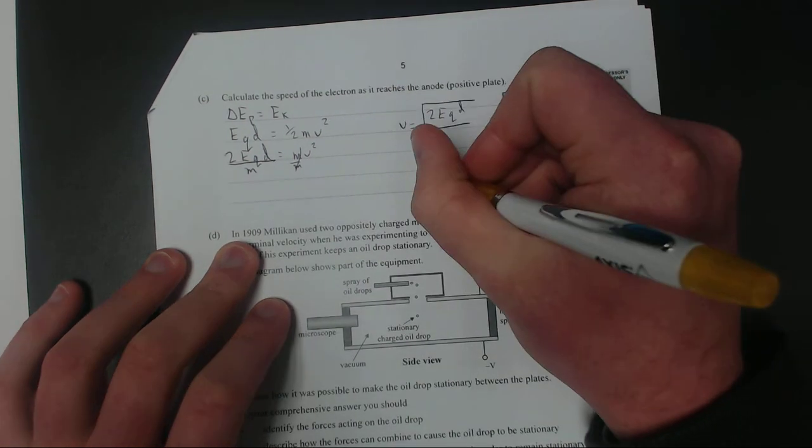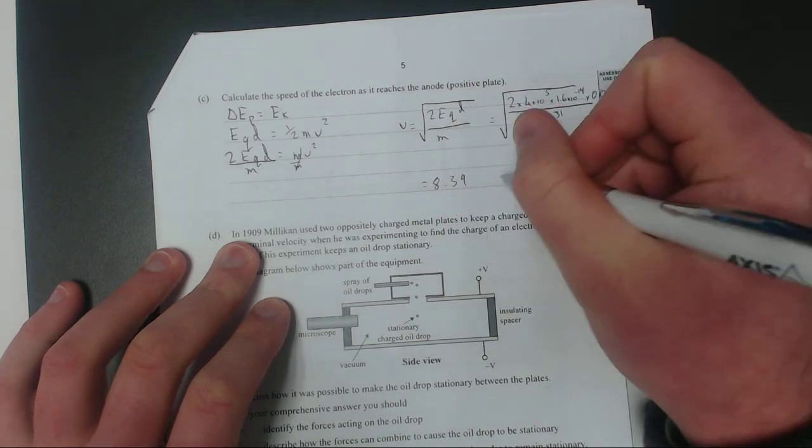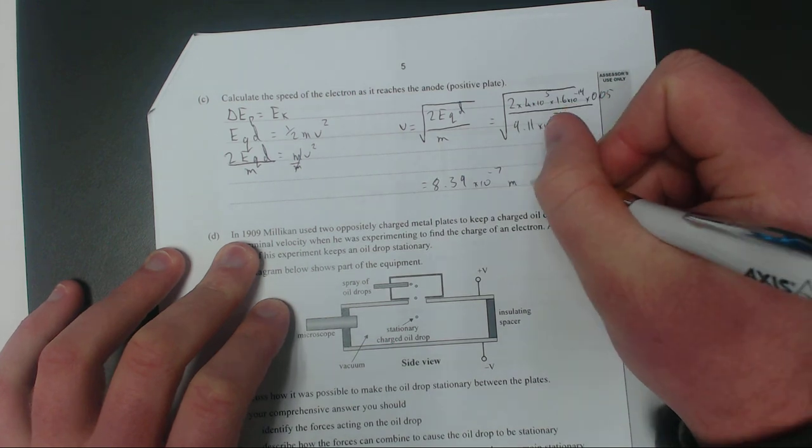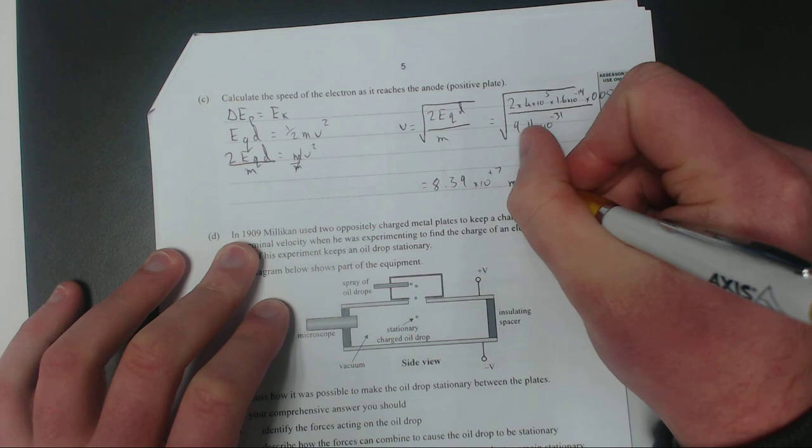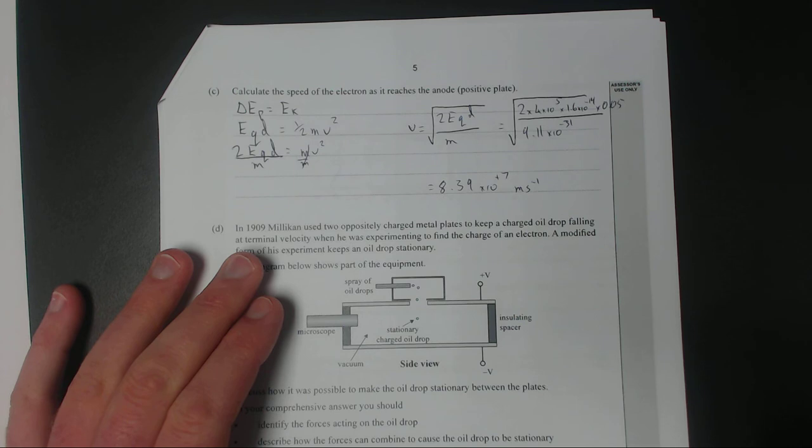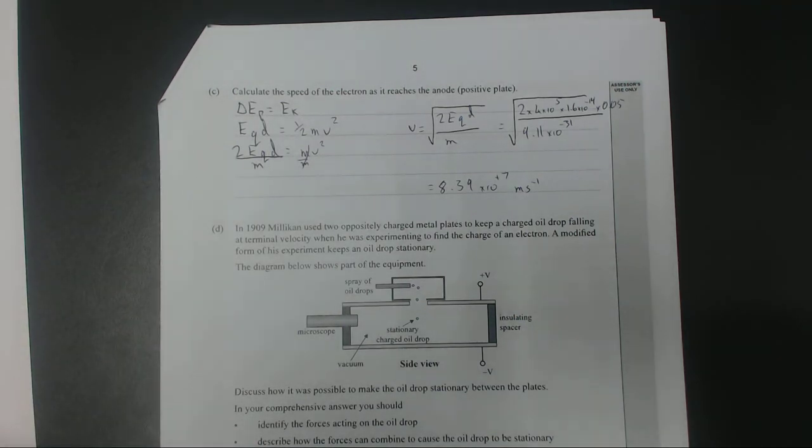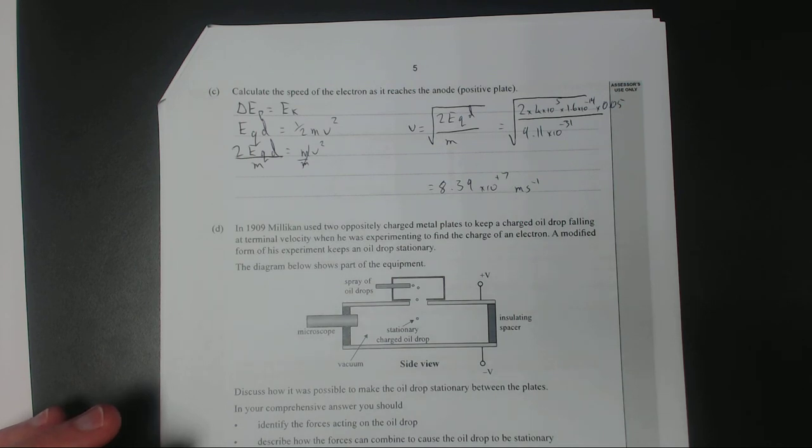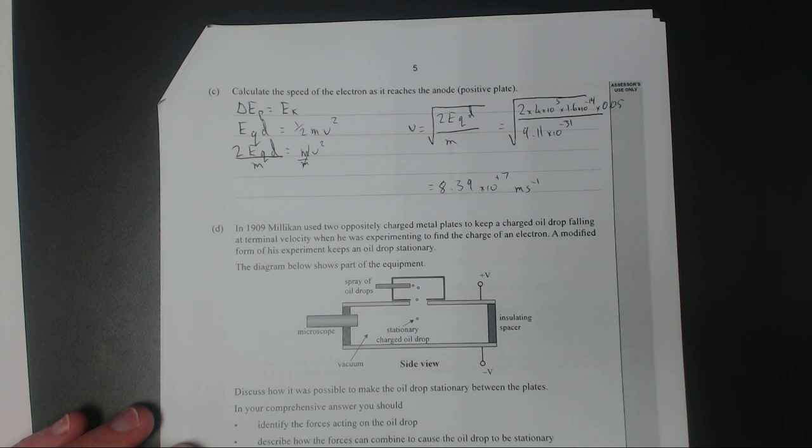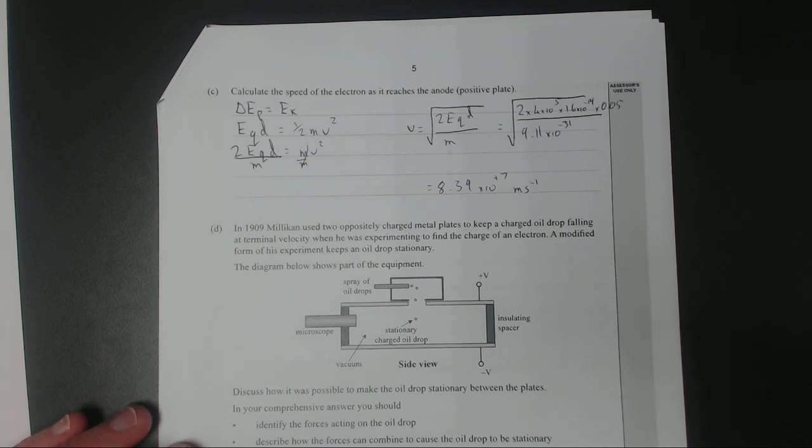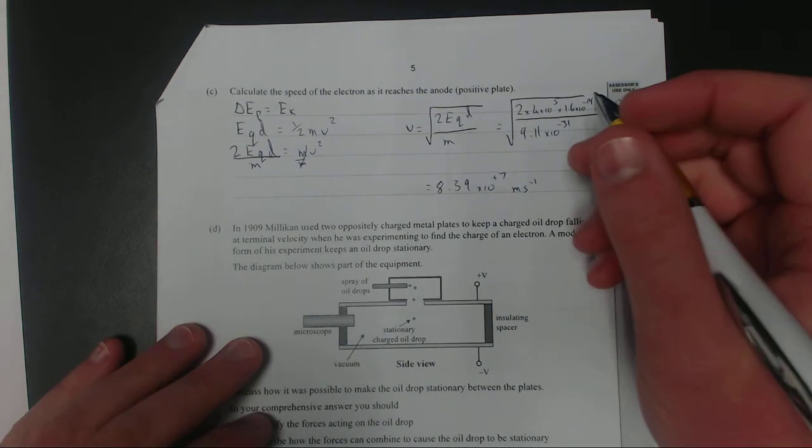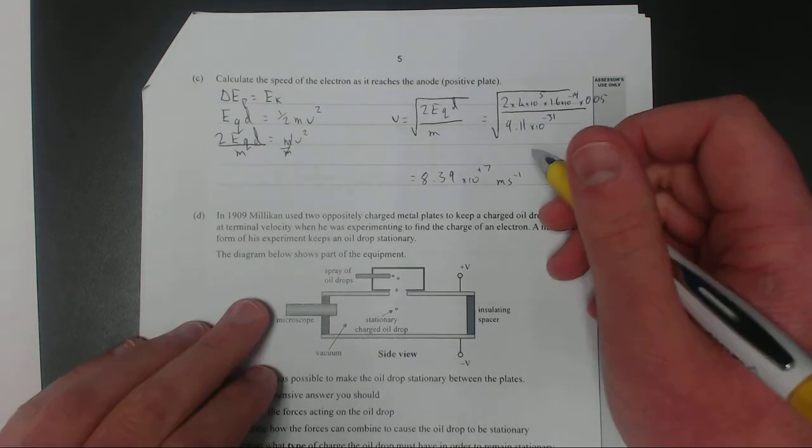So if you plug that into your calculator and calculate it all through it should come out as 8.39 times 10 to the positive 7 meters per second. Which is fairly fast. That's pretty close, well not exactly close but it's fairly close to the speed of light which is 3 times 10 to the 8. So these guys are getting really really really fast, which doesn't seem that realistic but I suppose if it's x-rays it must be getting up there.